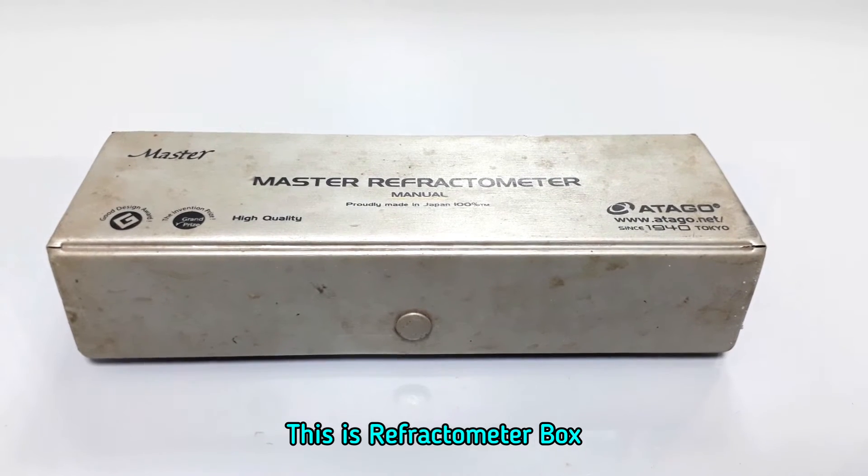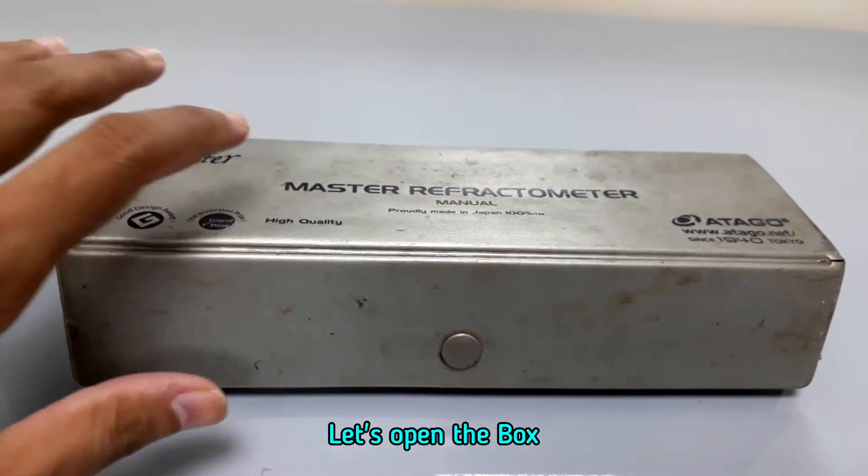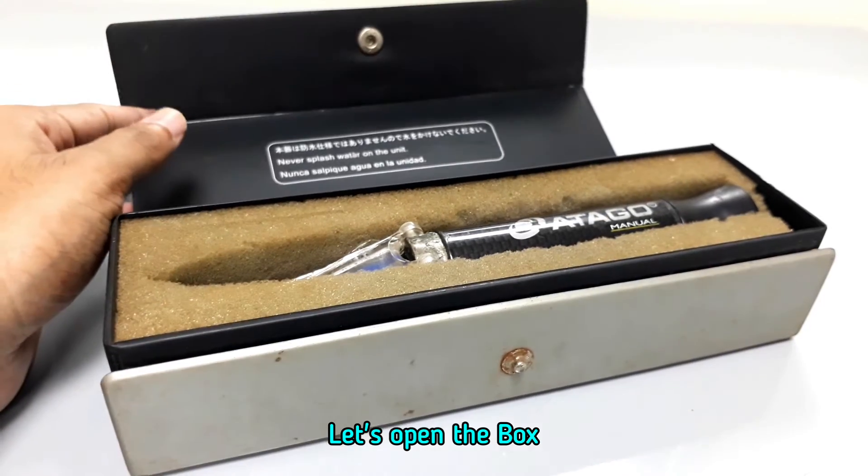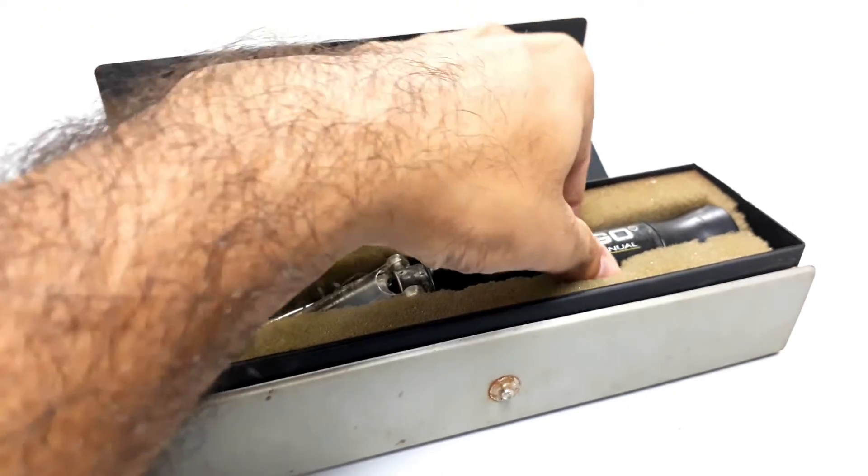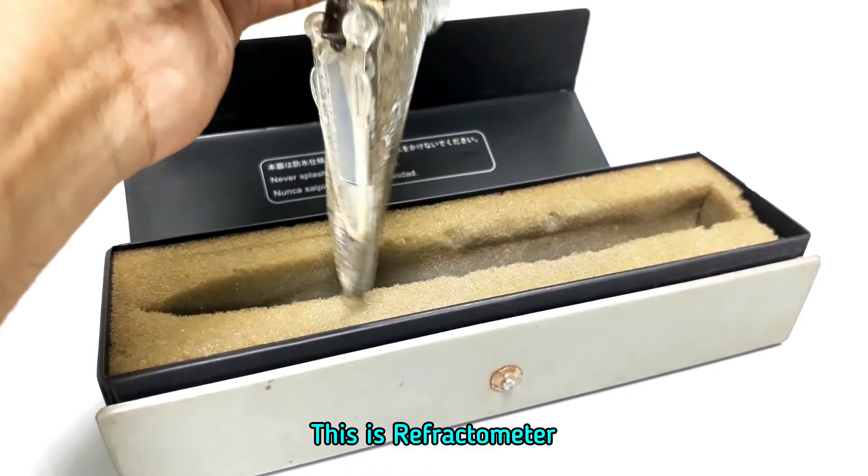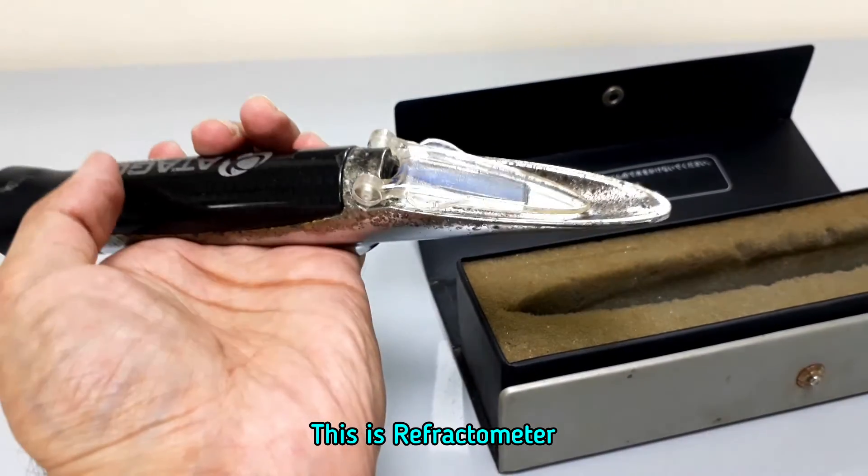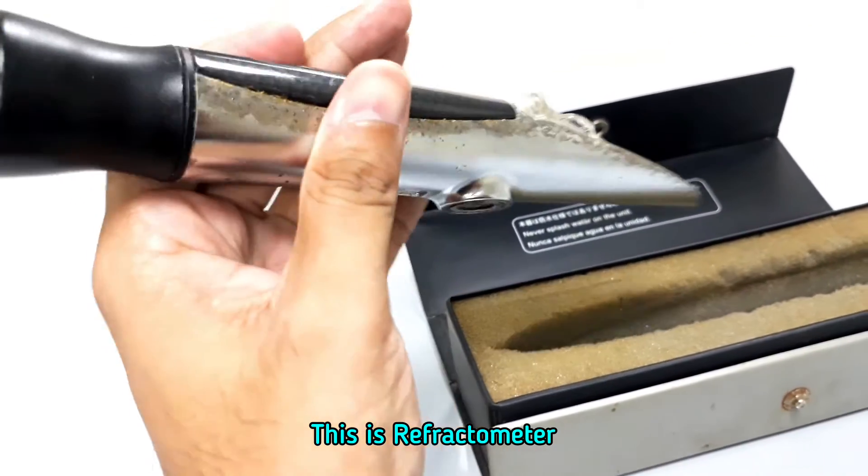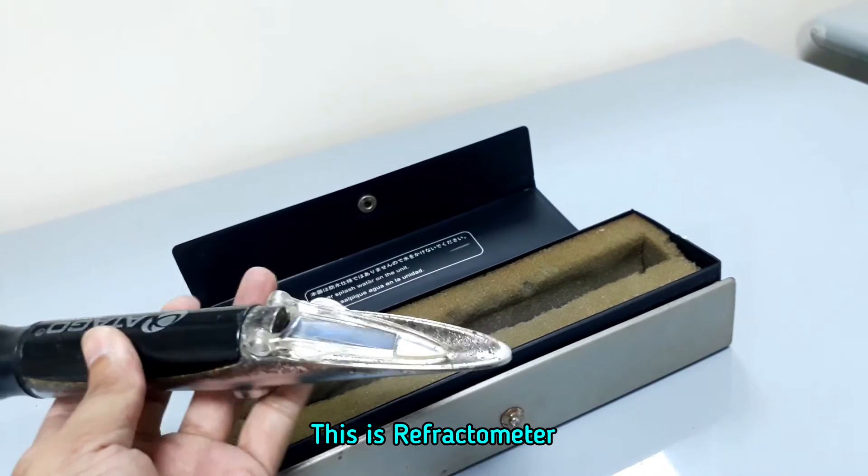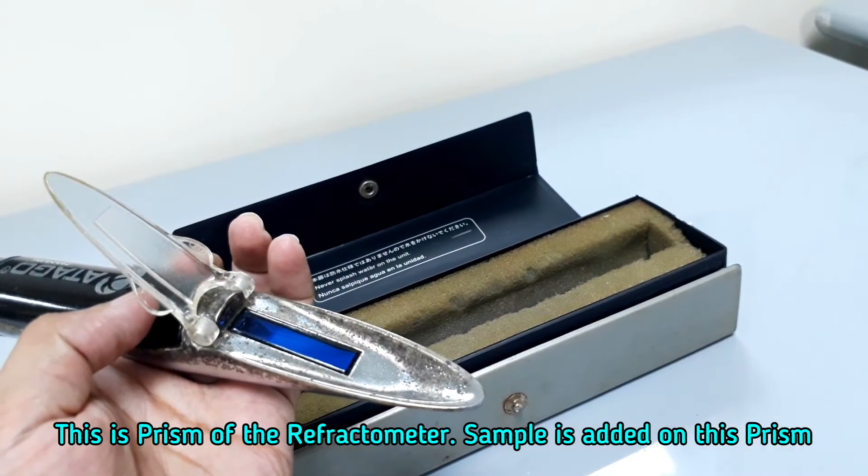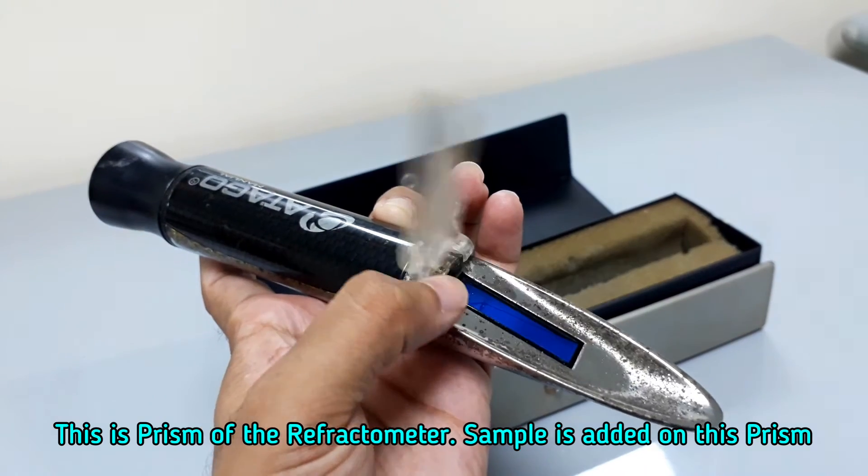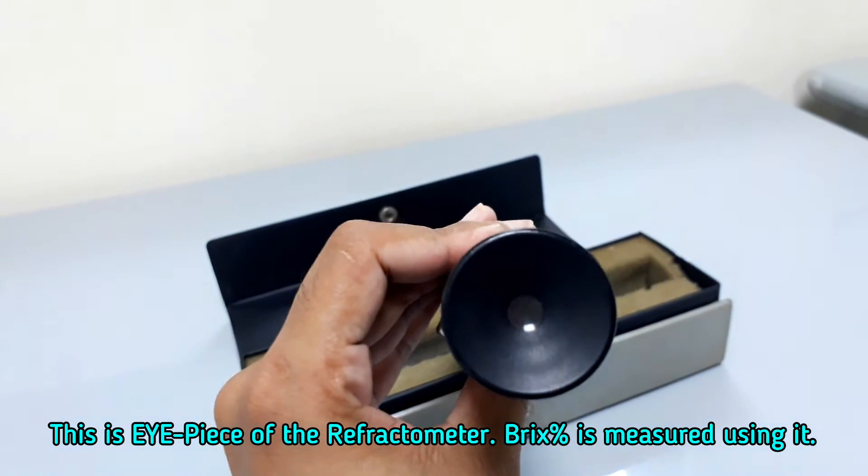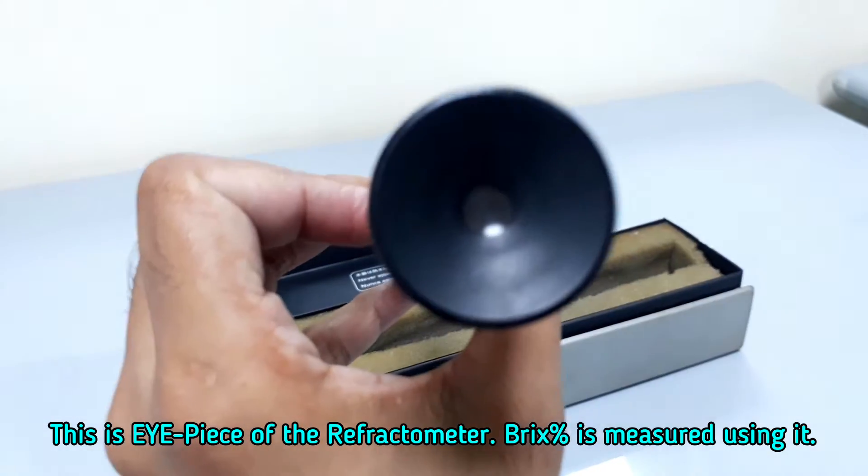This is the refractometer box. This is the refractometer. This is the prism of the refractometer. Sample is added on this prism. This is the eyepiece of the refractometer. Brix percentage is measured using it.